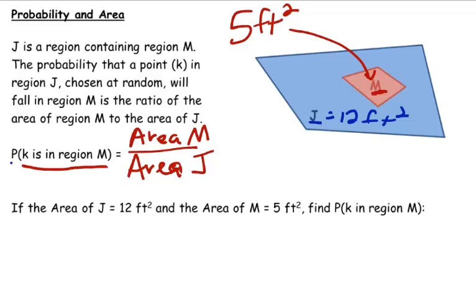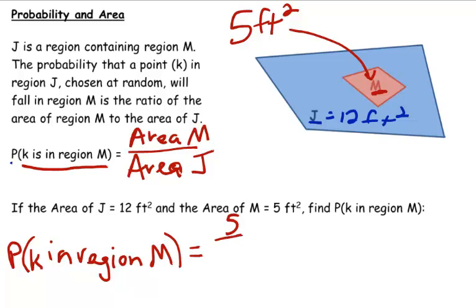Then the probability, the probability that K is in region M, would be the area of the small region inside, which is 5, divided by the area of the larger region, 12. And my probability, 5 over 12, if you do that division, is 0.42. That's the probability.